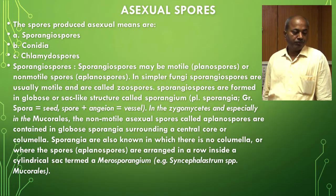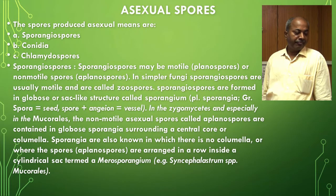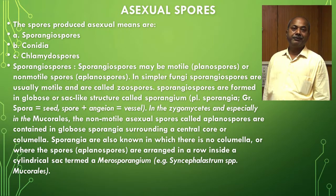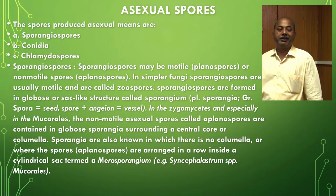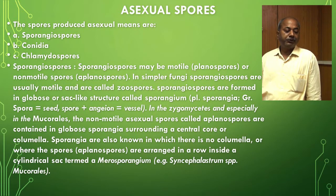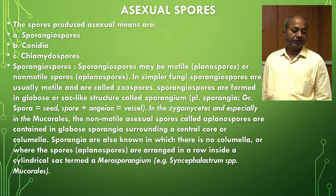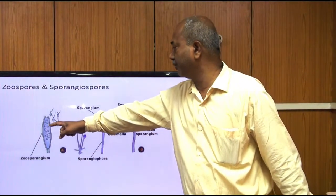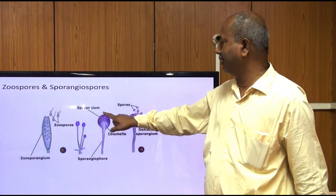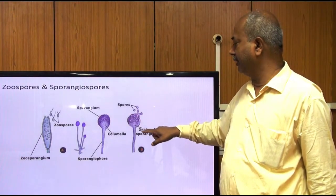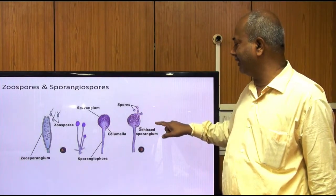Zoospores are provided with one or two flagella. The flagellum is a hair-like or tinsel-like structure that serves to propel the motile cells. They are whiplash or tinsel type. The whiplash flagellum has a long rigid axoneme of 11 fibrils (9 plus 2 arrangement) and a short flexible end formed of the two central fibrils only. The tinsel flagellum has a rachis covered along its length with short fibrils. After maturity, the wall of the sporangium dehisces and the spores are liberated.